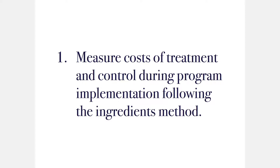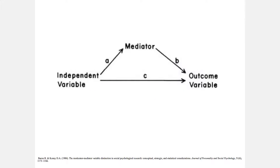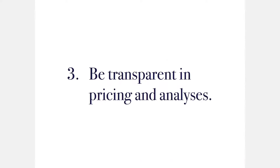Some quick takeaways: we want to think about the cost of treatment and control, and generally we try to follow the ingredients method for both. We'll carefully consider any induced services that maybe mediate our outcome. You might have a situation where your treatment directly impacts your outcome, or a situation where your treatment is changing services and those services are mediating your outcome — you want to think about that. And again, be transparent.